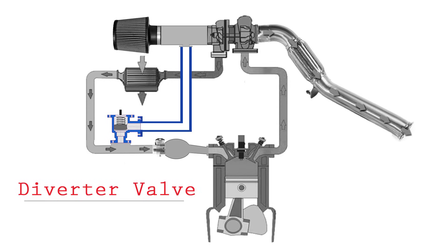If we take a look at this picture of the diverter valve — once you get the boost into the system and you close that throttle plate, the diverter valve will open, which then allows the air to recirculate back around to the intake on the front side of the turbo.